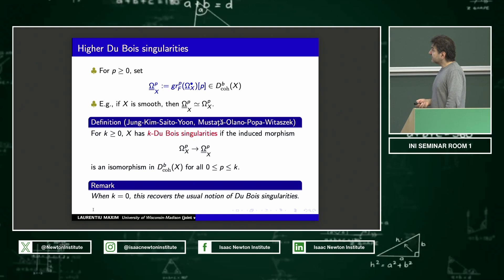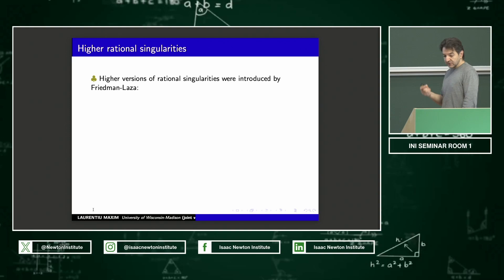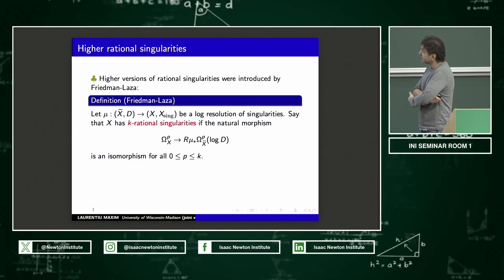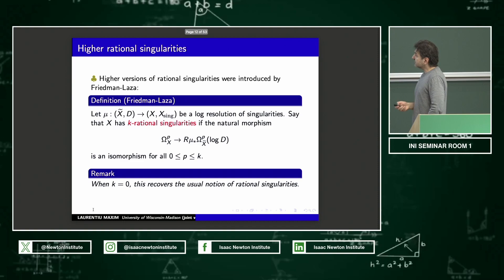I'm going to take the induced map on the graded pieces of the Kähler differentials and the higher Du Bois complex. And I'm going to ask that this induced morphism is an isomorphism of complexes up to level K. If you remember the definition of Du Bois, this recovers the case of Du Bois when K is 0. Now, there is an analogous notion for higher rational singularities. This was introduced by Friedman and Laza. And it goes through a resolution of singularities. You take a resolution of singularities, resolution of the singular locus by normal crossing divisor. And K rational singularities means that this natural morphism from Kähler differentials to the push forward of the log forms from the resolution is an isomorphism up to level K.